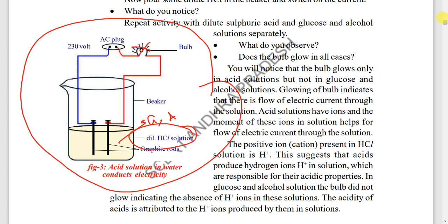If HCl solution is used, the bulb glows. Otherwise, if glucose or alcohol is used, H+ ions are not released, so the bulb does not glow.